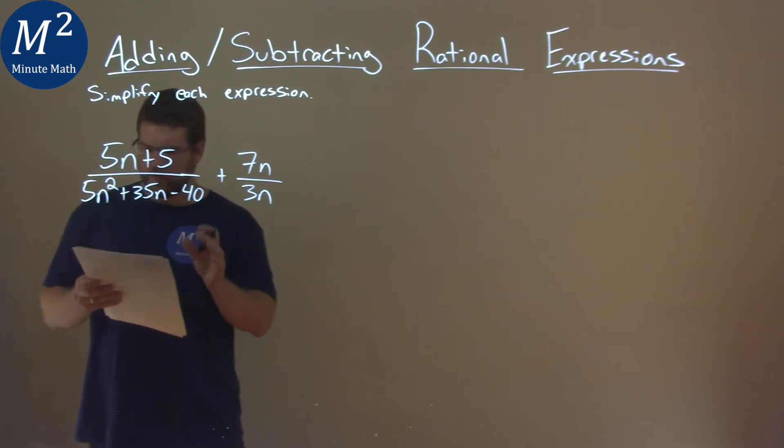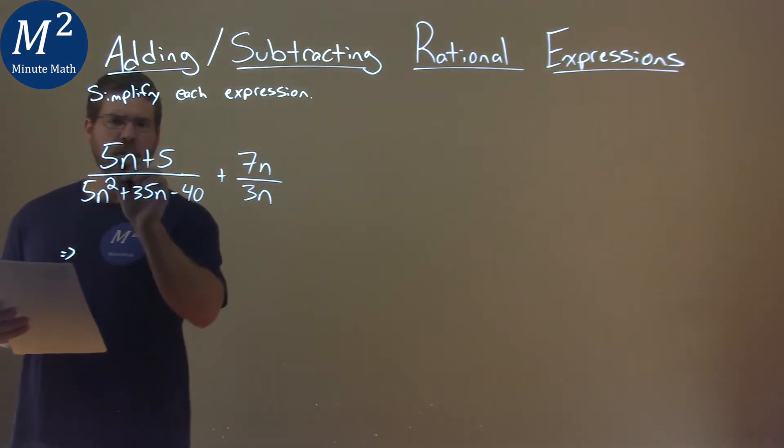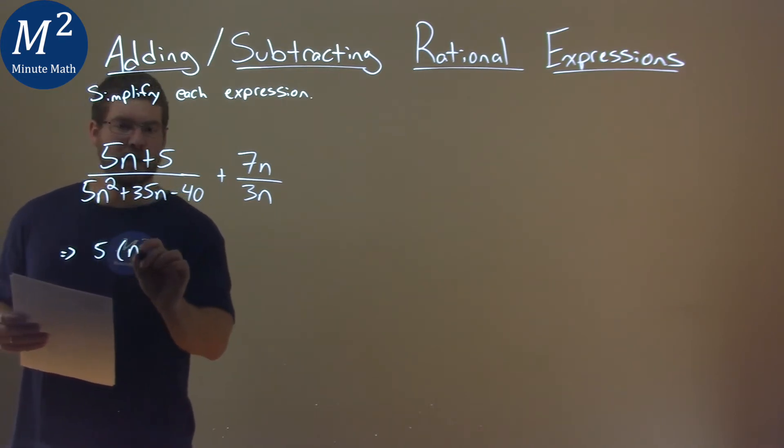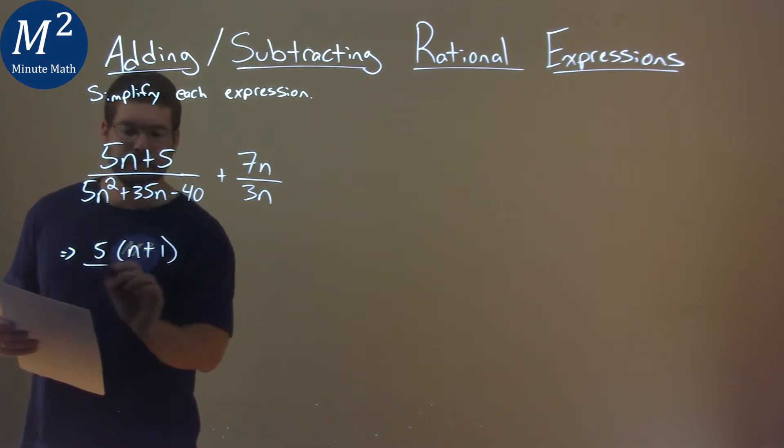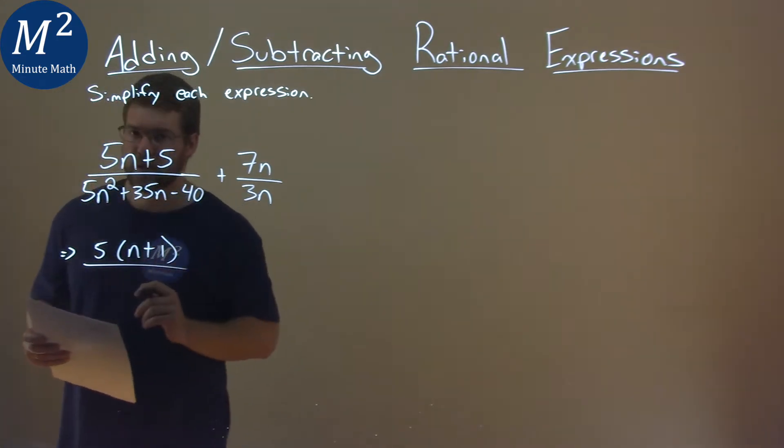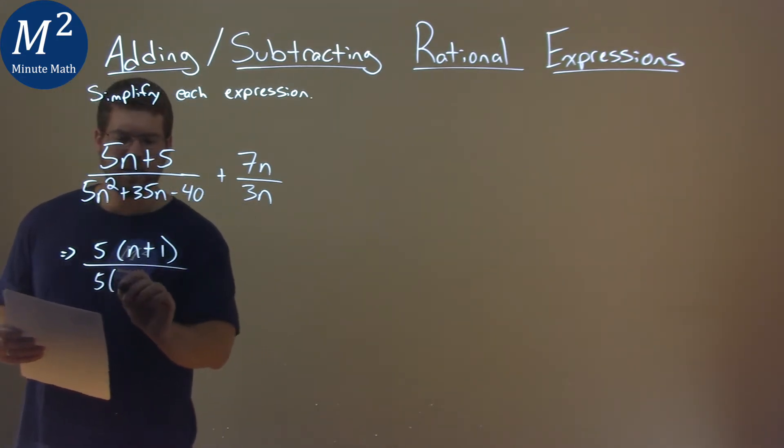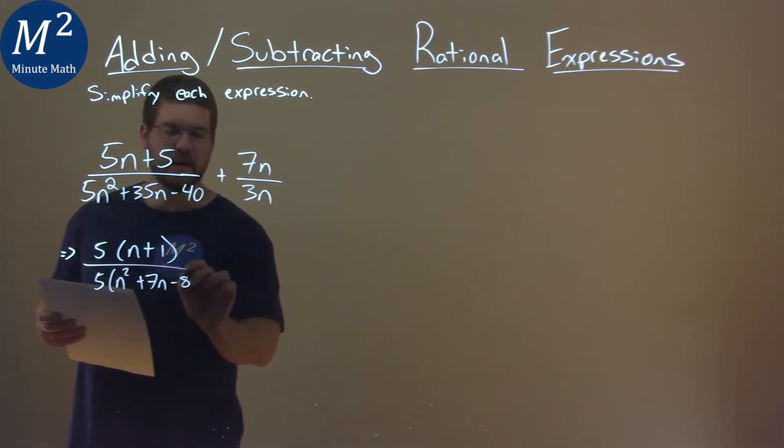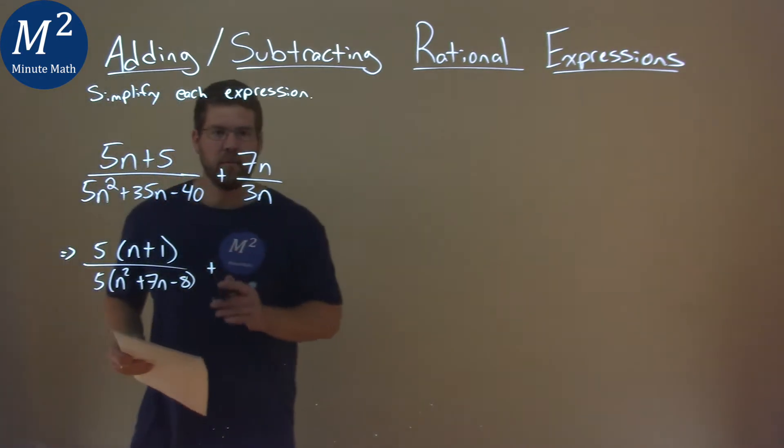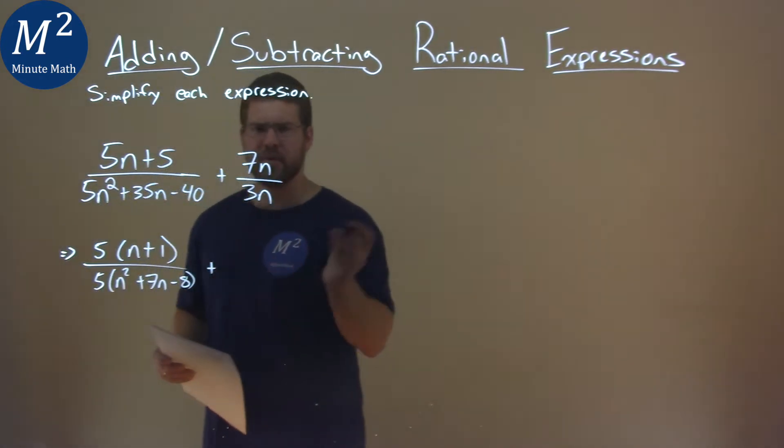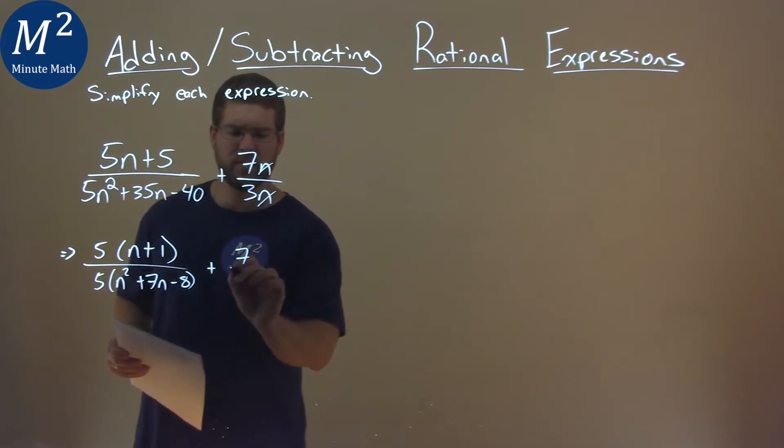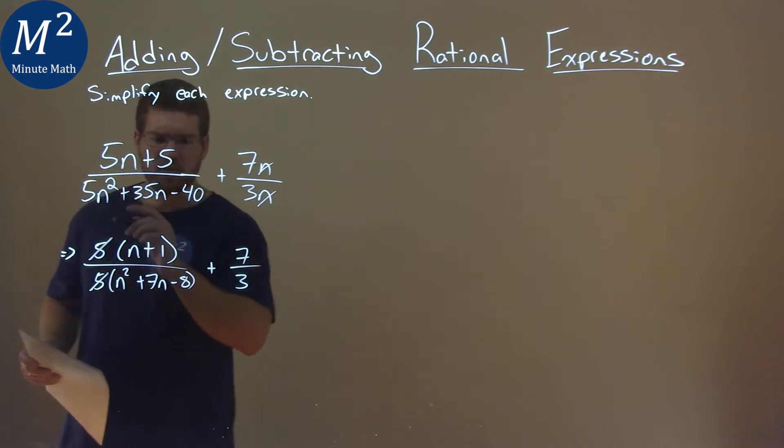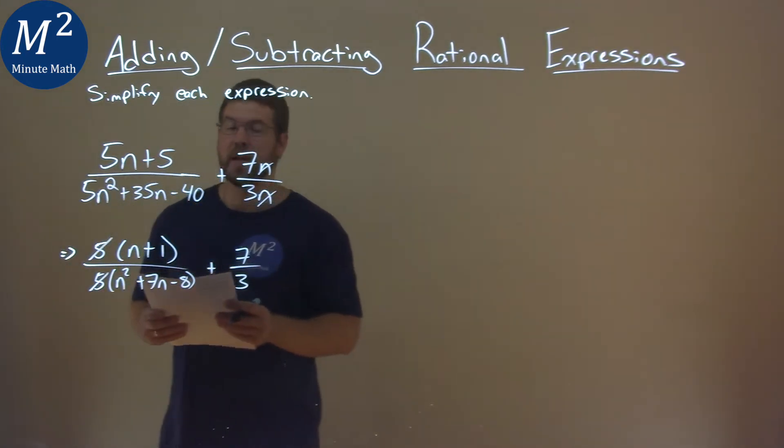First I'm going to see what I can break down here for each one. So I have 5n plus 5. I can pull a 5 out here, and I'm left with an n plus 1. The denominator, I can pull a 5 out of each part here as well. I pull out 5, and I'm left with an n squared plus a 7n minus an 8. Now we have 7n over 3n. The n's just cancel, and we have 7 over 3. And here actually, the 5's cancel too. So we have n plus 1 over n squared plus 7n minus 8.